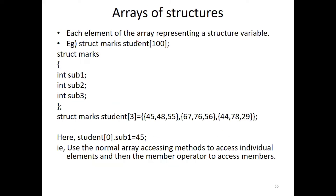Next is array of structures. In an array of structures, there are structure variables that represent multiple records. For example, we have an employee or student example. In the study of marks, the structure variable is an array variable — it is an array type structure variable.